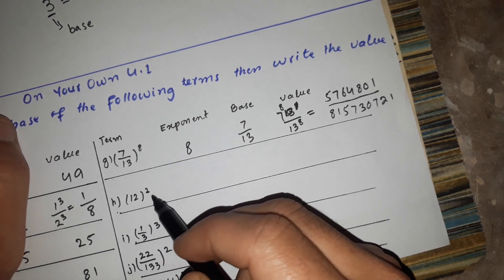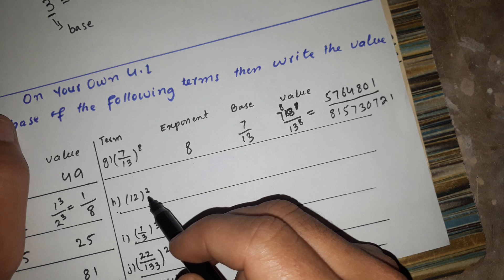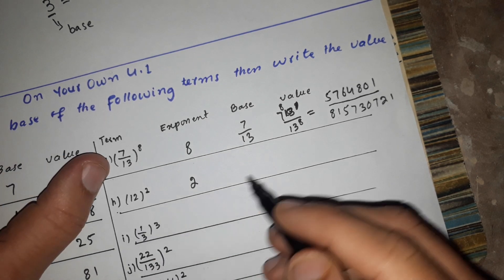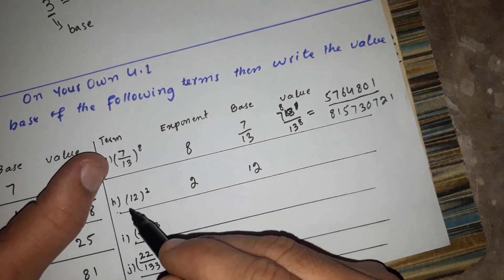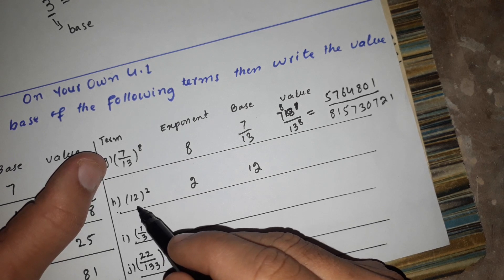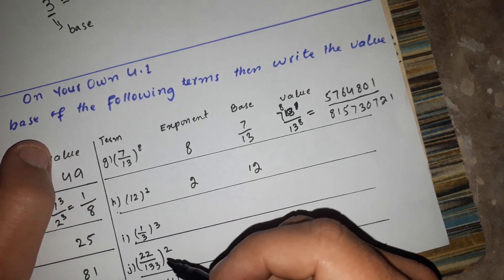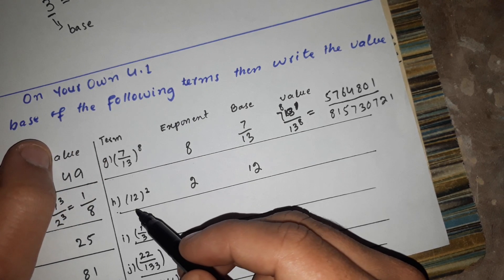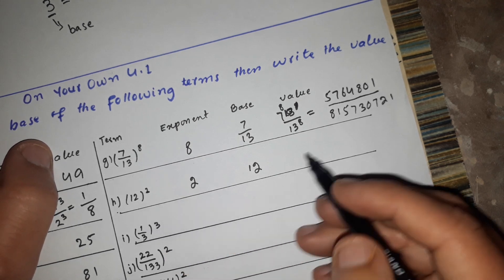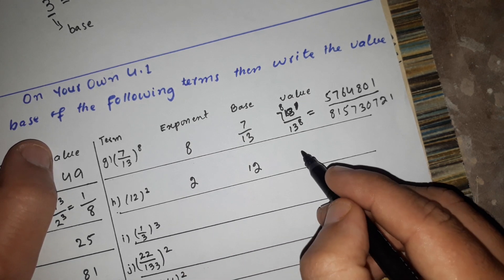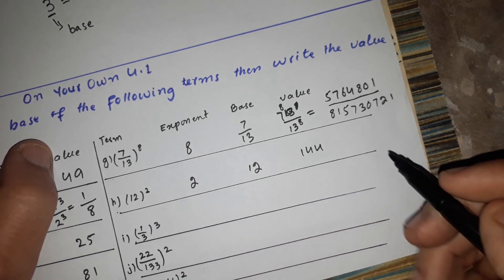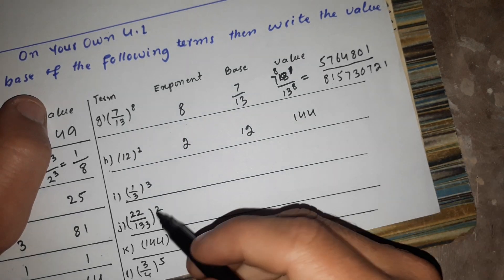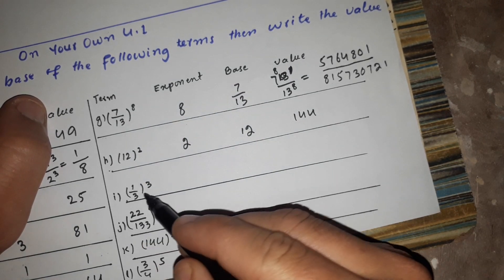The exponent is 2, so it is squared. The base is 12. We multiply 12 × 12, and the answer is 144. So the value is 144.